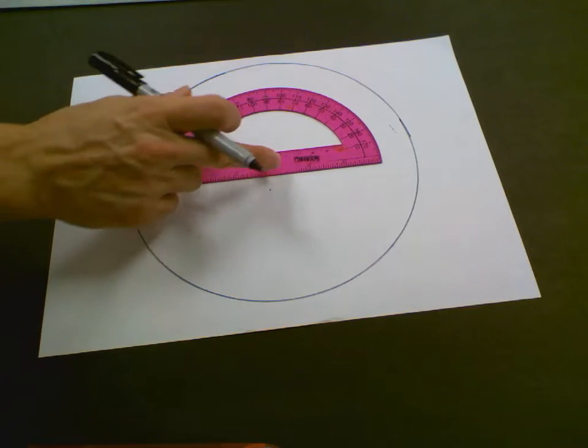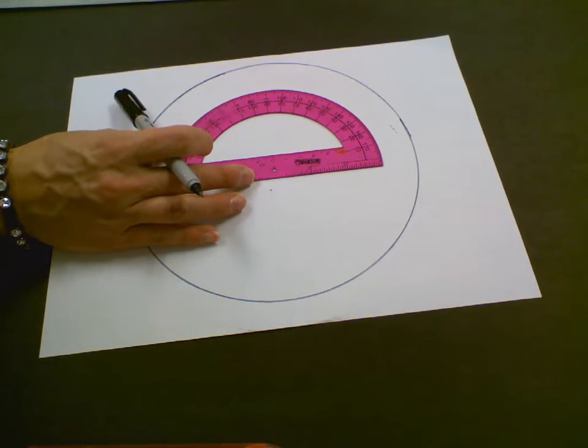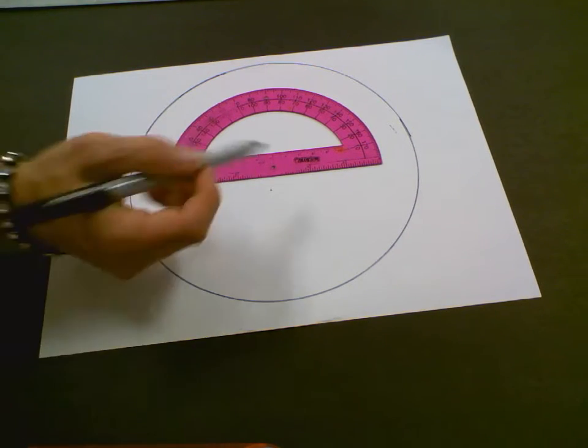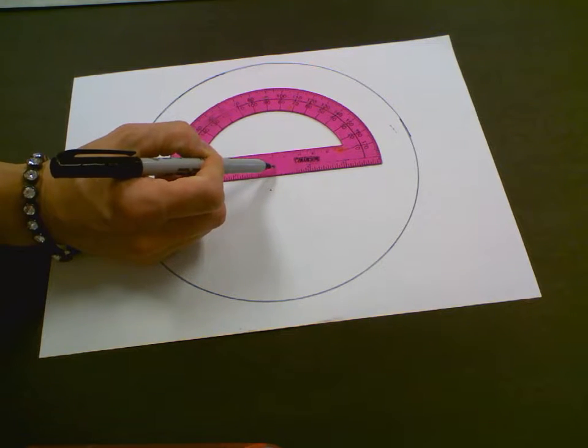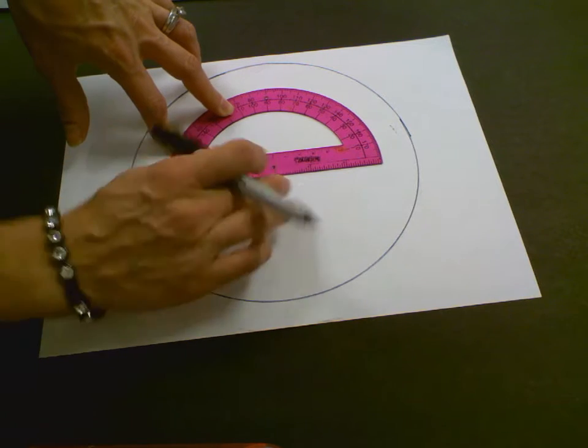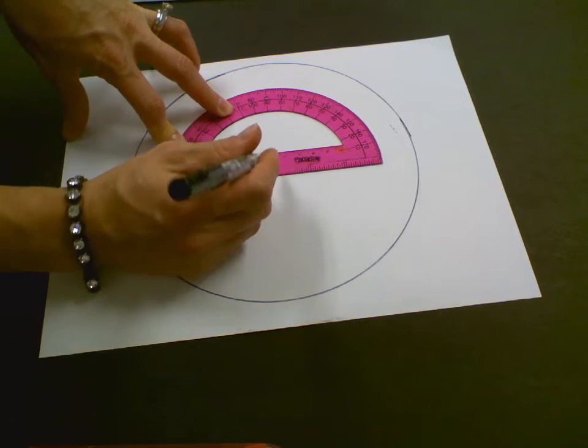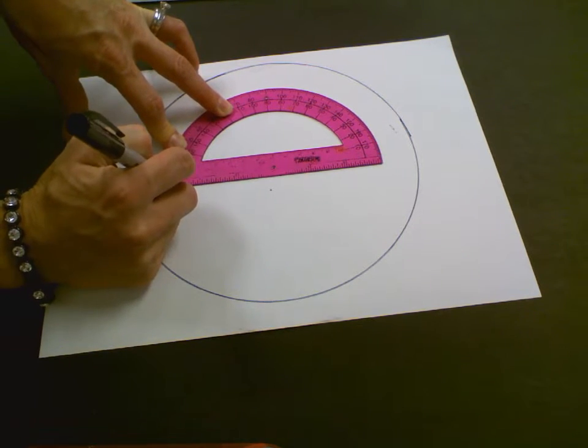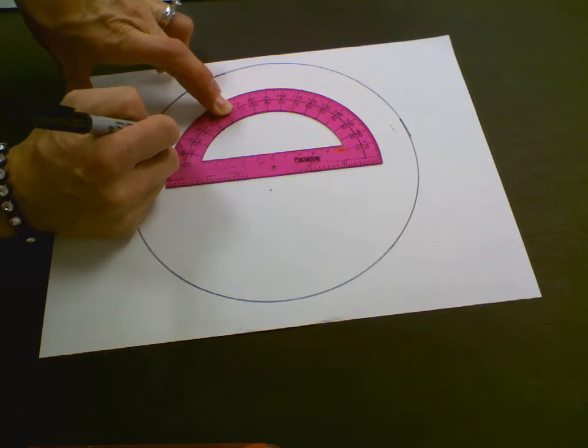On your protractor, that's this arc-looking tool, you've got a center point in the middle. You're going to line that center point up over the center point of your circle. Don't get confused with this little dot that's on the other side of my paper. You're going to mark it every 30 degrees. So 0, 30, what's my next one?